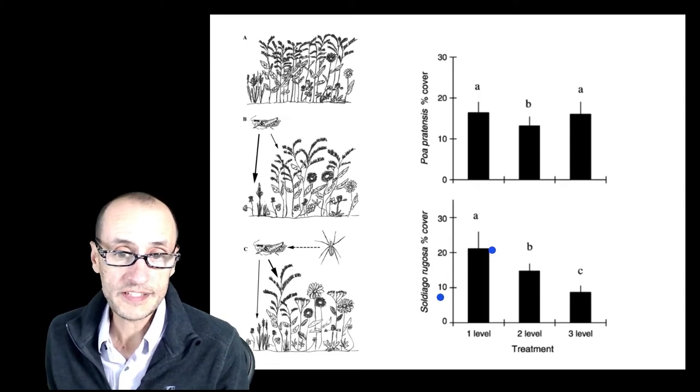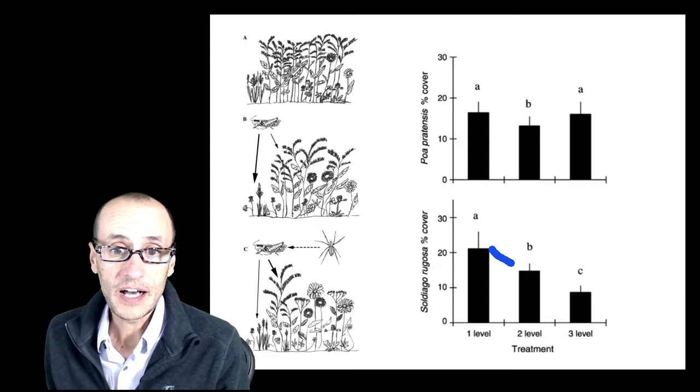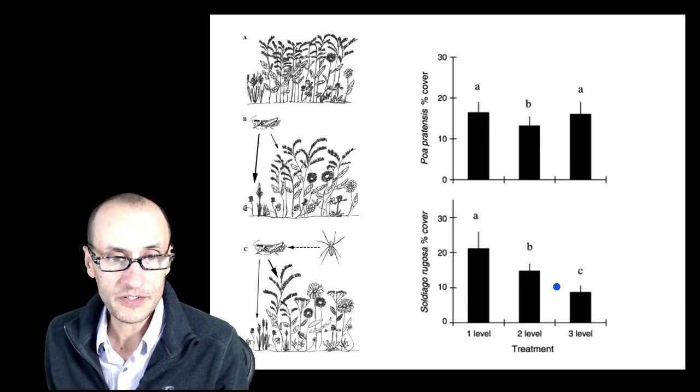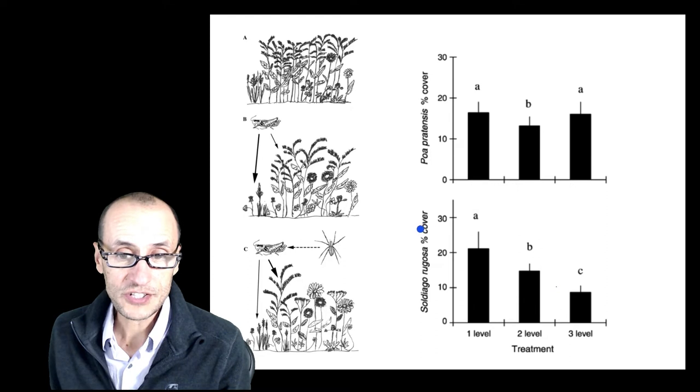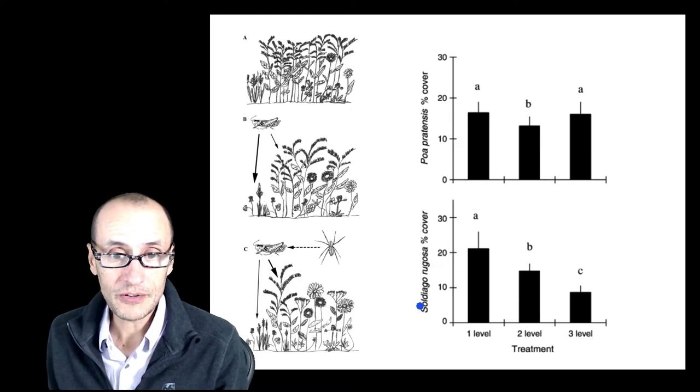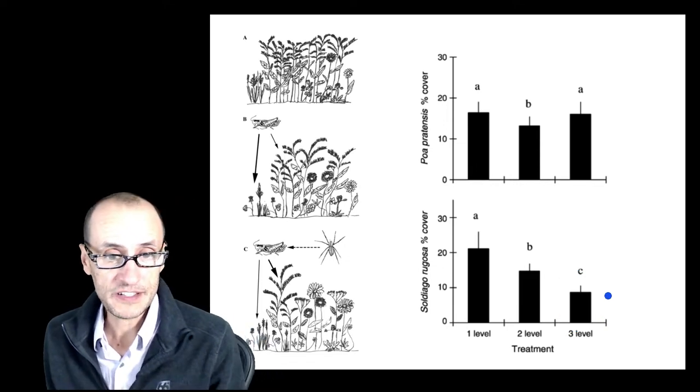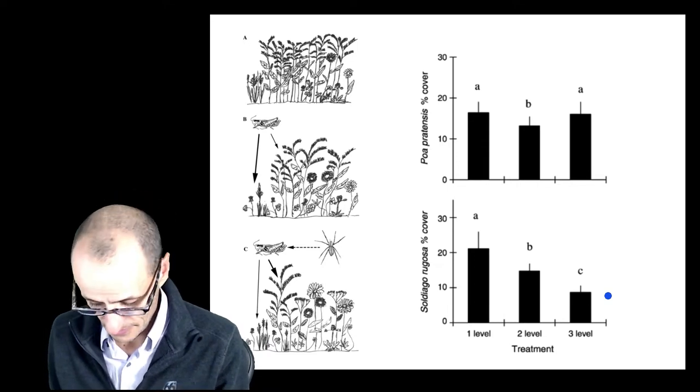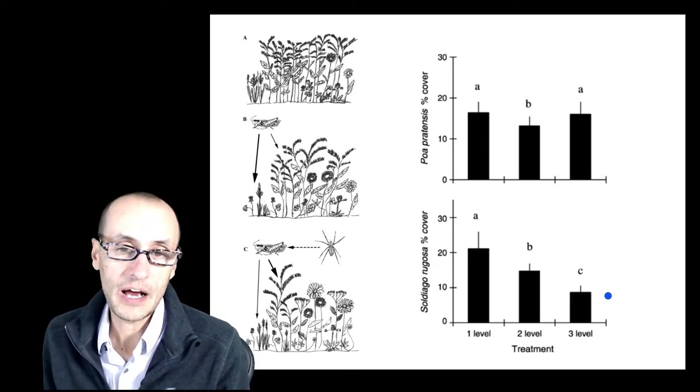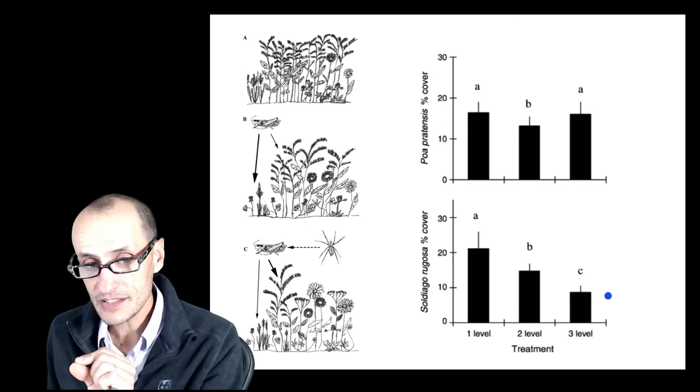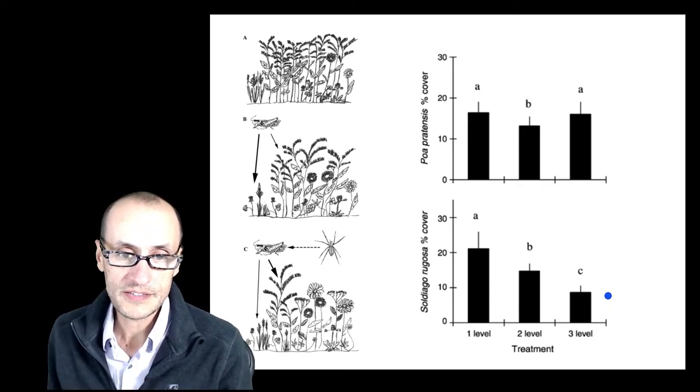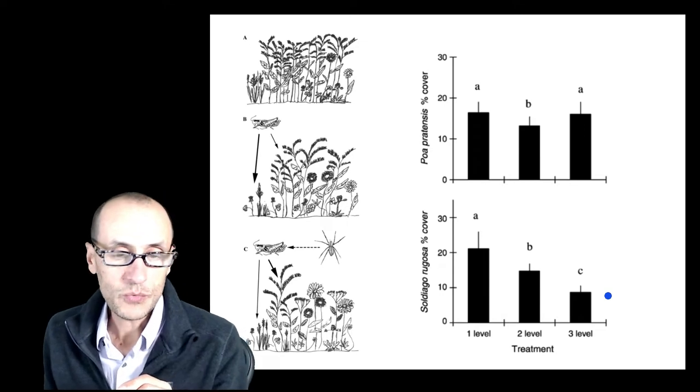Goldenrods, one example of these herbaceous plants, actually seem to decrease not only with the herbivores there, but they decrease even more when you add the spiders in there. So this is kind of crazy. There's actually a decrease in the amount of one of these species in the presence of a predator that is supposed to be decreasing the abundance and the effectiveness of the herbivores. So that's clearly not what's happening. It's happening for the grasses, but it's not happening for the goldenrods. And you can already see where this is going.